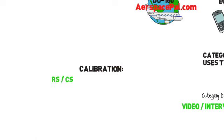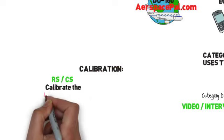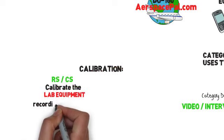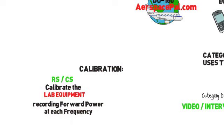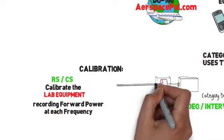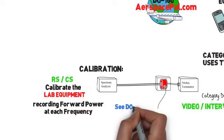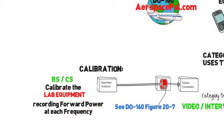Both calibrations for RS and CS are quite similar. Both use the test equipment setup to record the forward power required to achieve the category level at each frequency. However, CS uses an arbitrary load of 50 ohms to determine the test equipment deficiencies.